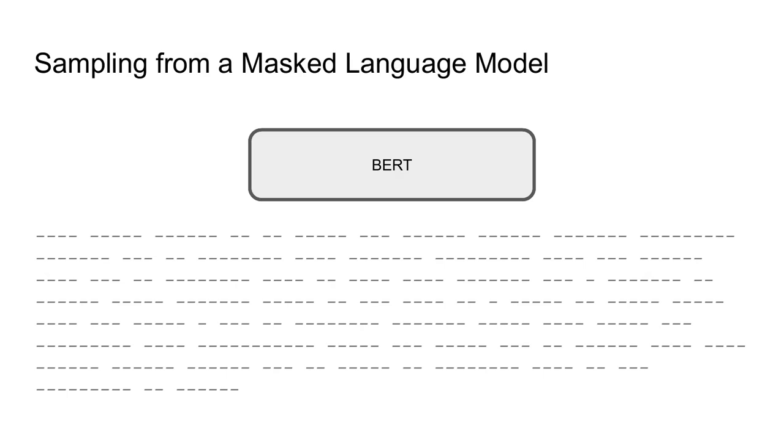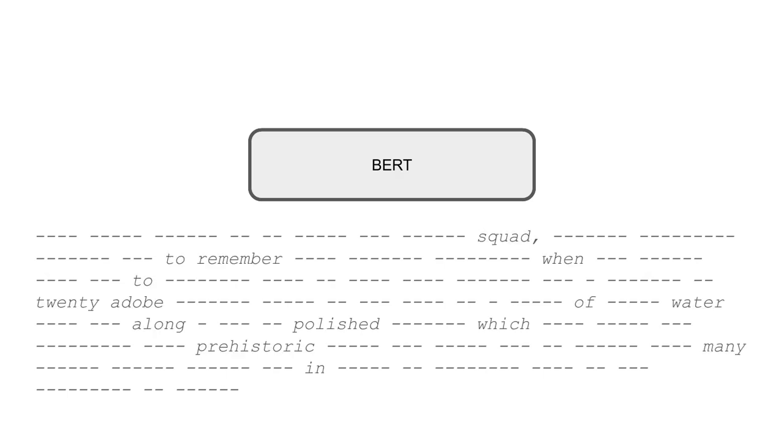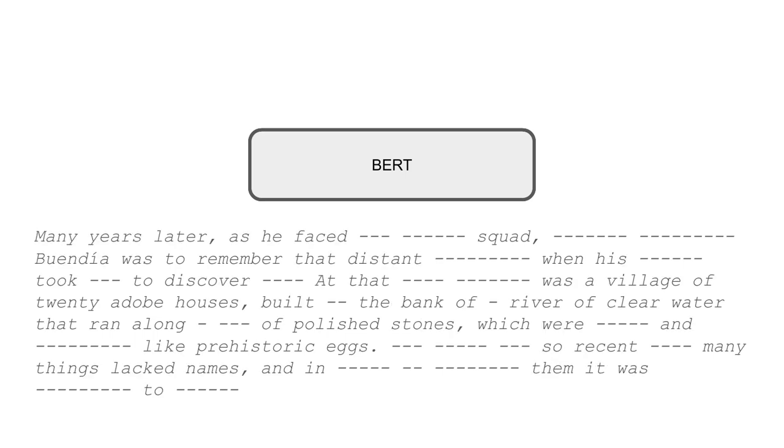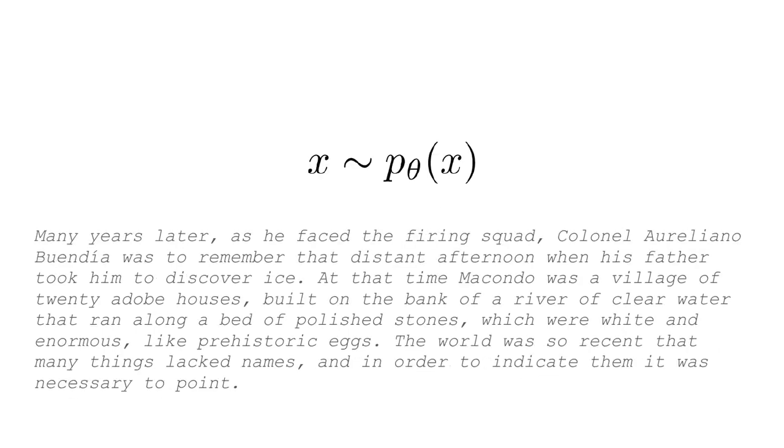Specifically, we're going to start with all blank tokens. We're going to feed these tokens into a BERT-style model. That model will then fill in some of the words, and then fill in some more words, and when it's done, we'll have a true sample from the underlying distribution.